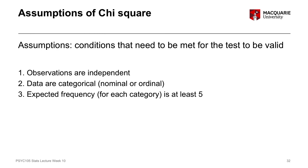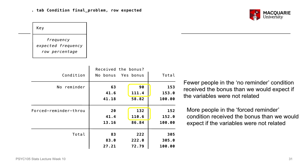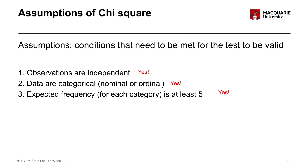Going back to our assumptions — we need to check these before running the test to see if it's appropriate. We know our observations are independent, as that's met through our sampling design. We know our data are categorical, just by understanding the variables and looking at the data. And we know the expected frequency for each category is at least five — none of those expected frequency numbers are anywhere close to five; they're all much bigger than five. So we've met all three assumptions and can now proceed to do the chi-square test of independence.